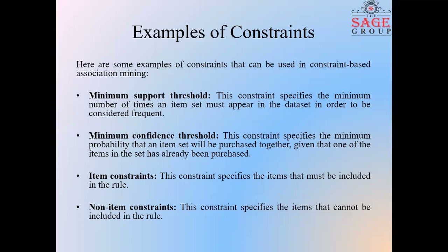Third is item constraints — this constraint specifies the items that must be included in the rule, meaning a particular item should be purchased. Fourth is non-item constraints — this constraint specifies the items that cannot be included in the rule, meaning these are items that should not be included.